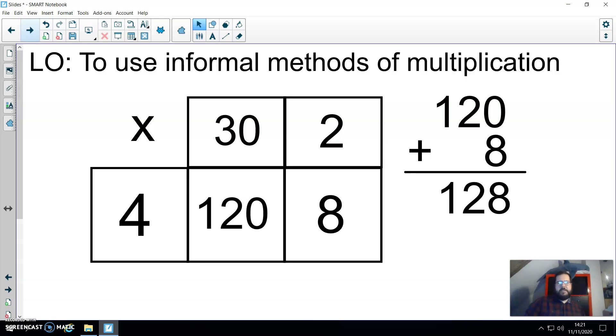So this method is a nice way of laying out the grid so that we can see the multiplications we're going to do. We partition it 32 into 30 and 2, we multiply it by the multiplier, we do the ones first to get 8, we do the tens next to get 120 and put them together to make 128.